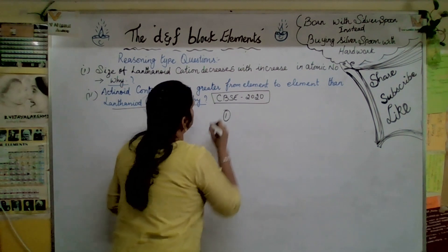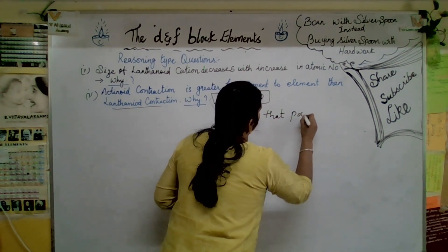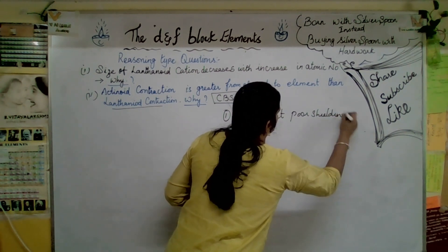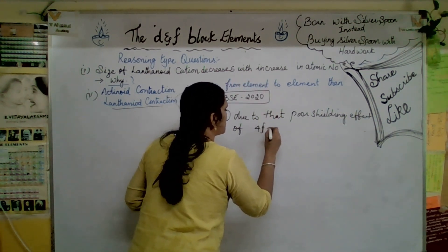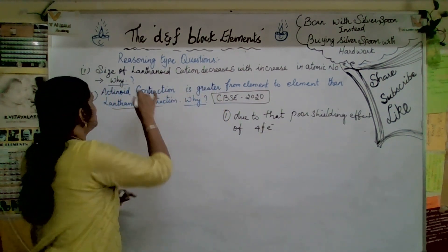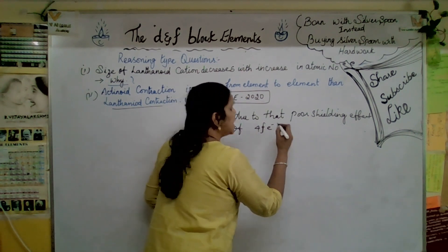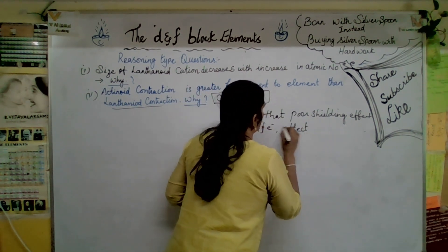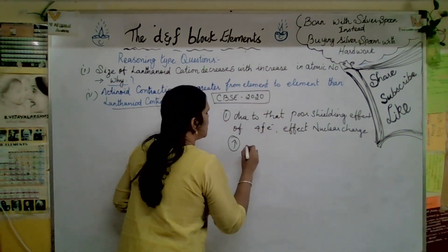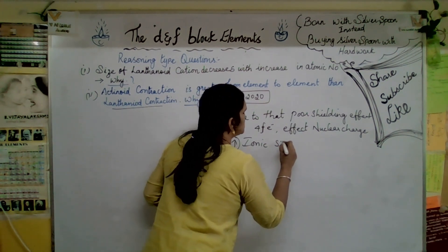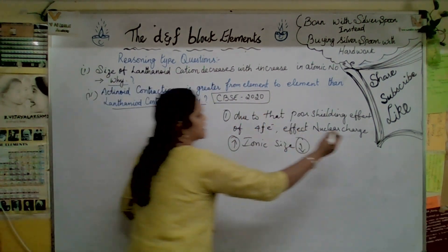Let us write that answer. Due to the poor shielding effect of 4F electrons - I have written 4F electron directly because lanthanoids have only 4F electrons. Due to the poor shielding effect of 4F electrons, the effective nuclear charge increases and ionic size decreases.